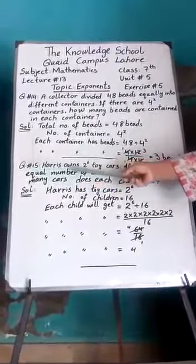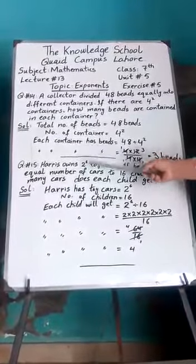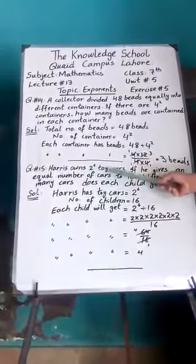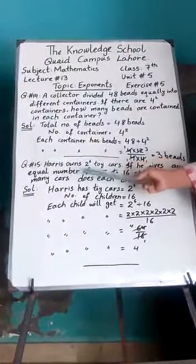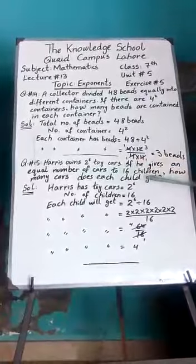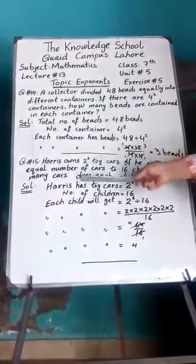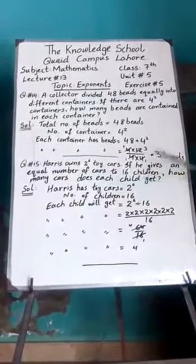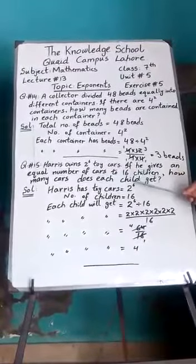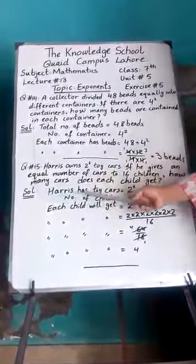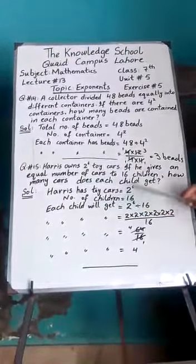Question number 15. Haris owns 2 raised to power 6 toy cars. If he divides an equal number of cars to 16 children, how many cars does each child get? So for solution, Haris has 2 raised to power 6 cars. Number of children 16.